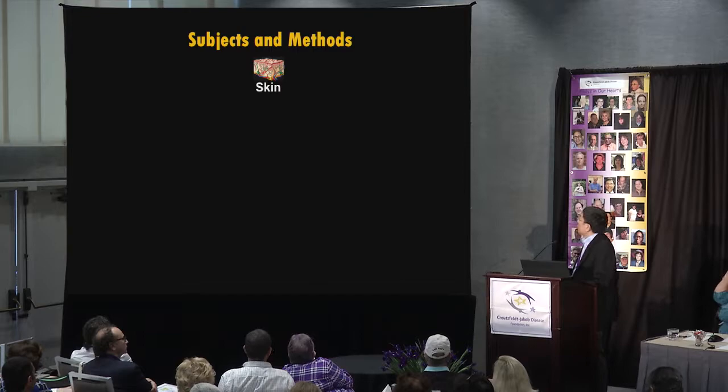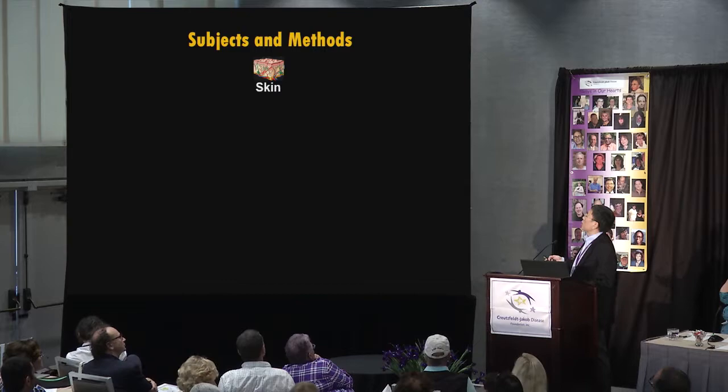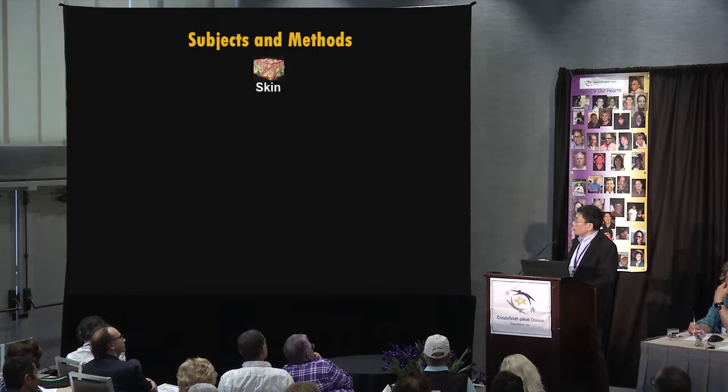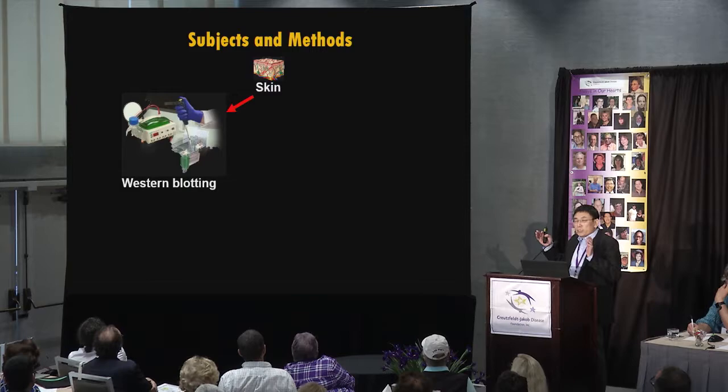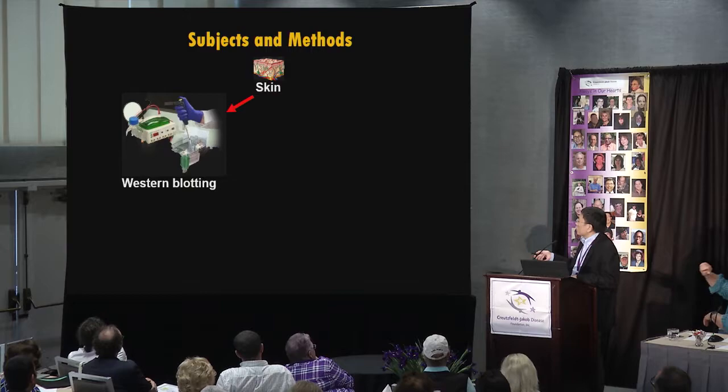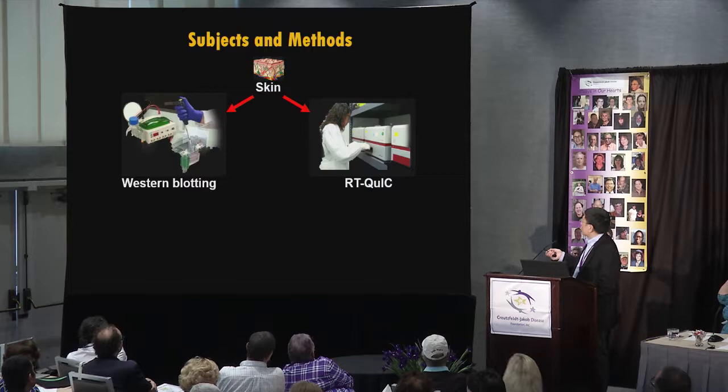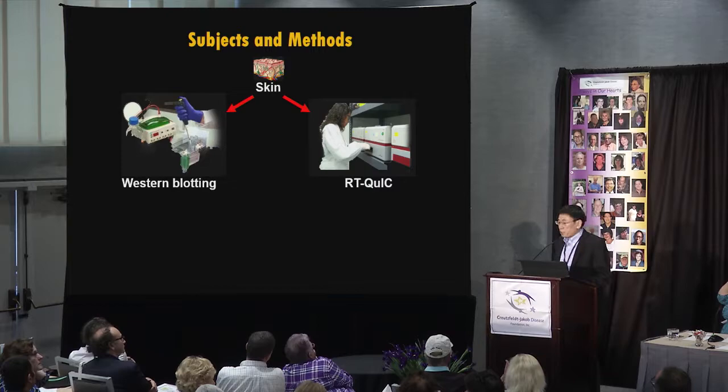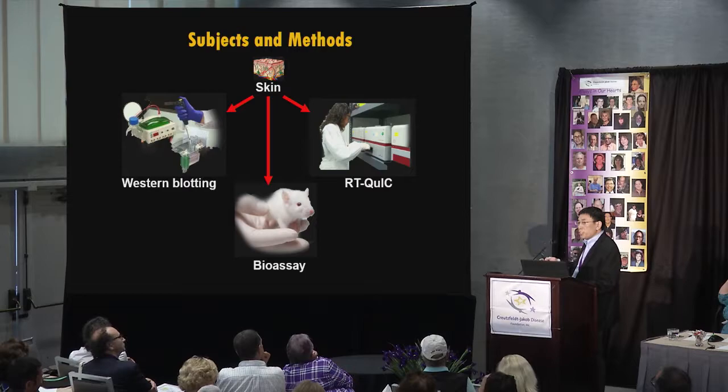To test this hypothesis, we collected skin samples from 38 patients, including 21 sporadic CJD, 2 variant CJD, and 15 non-CJD controls. We first enriched PRP by ultracentrifugation and tested with the conventional method, Western blot. We also tested with real-time quaking-induced conversion (RT-QuIC), as mentioned previously. Finally, we tested whether the CJD skin samples are infectious using a bioassay in animal models.